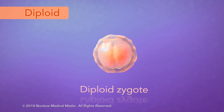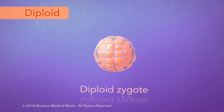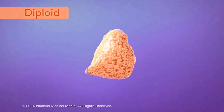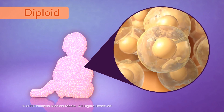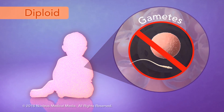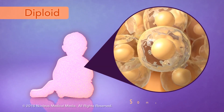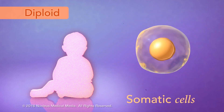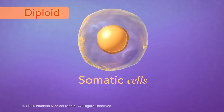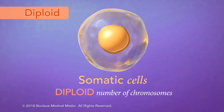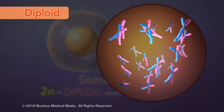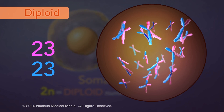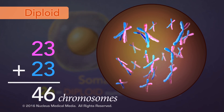A diploid zygote will go through cell division many times to produce all the cells in the body of a fully developed baby. All body cells, except gametes, are referred to as somatic cells. In humans, somatic cells are always diploid, written as 2N, which means they have two sets of 23 chromosomes, for a total of 46 chromosomes.